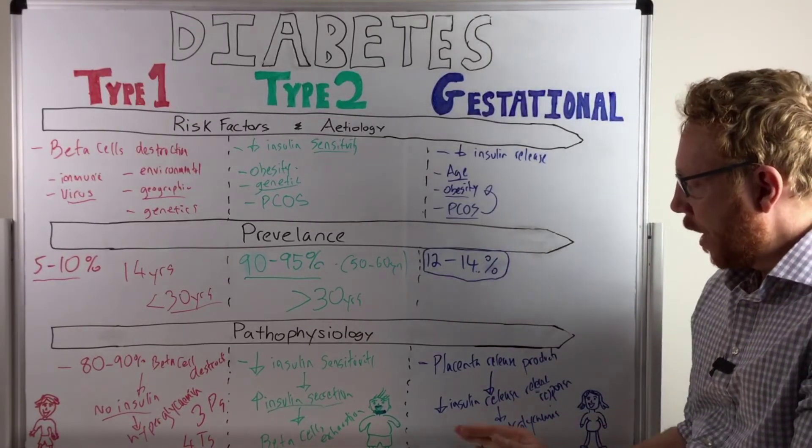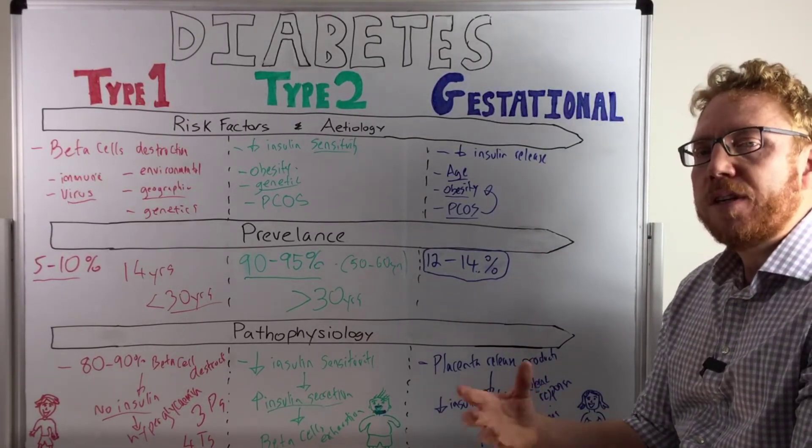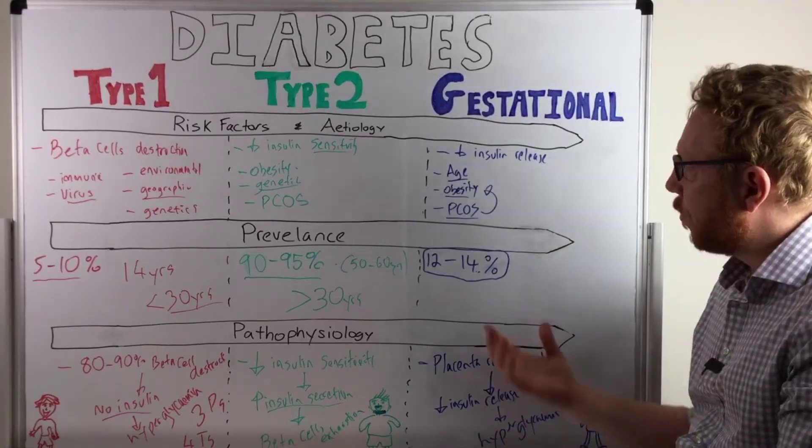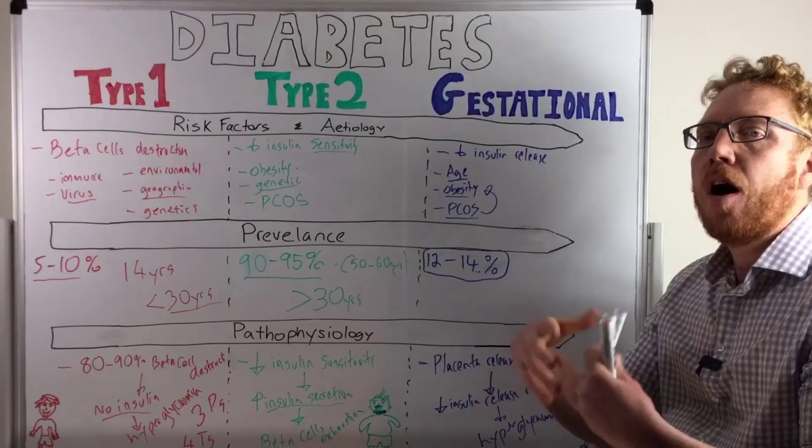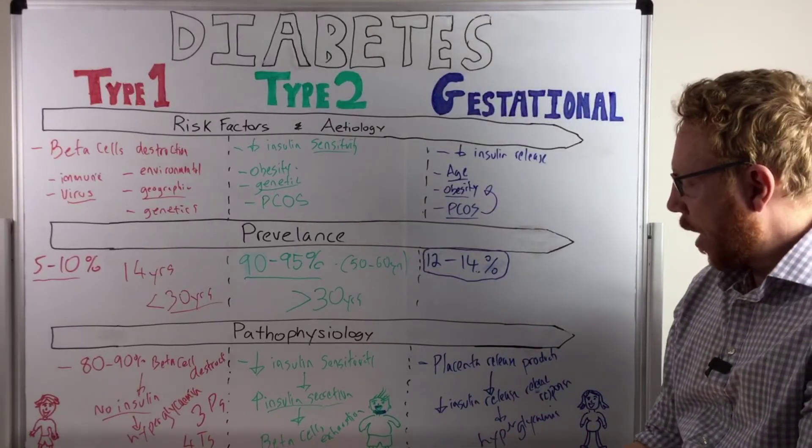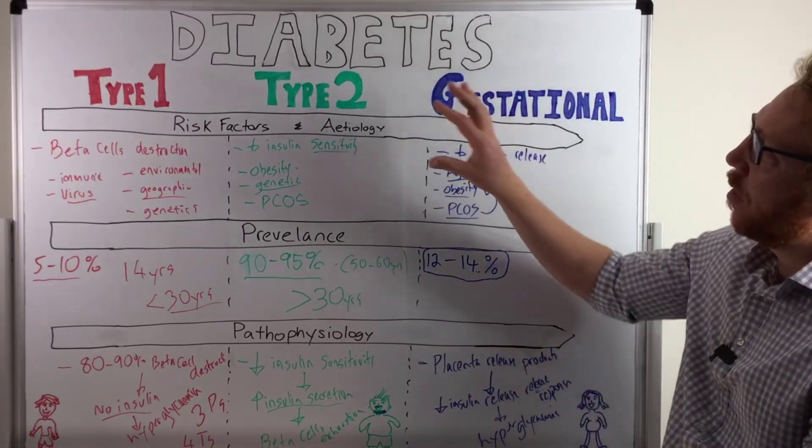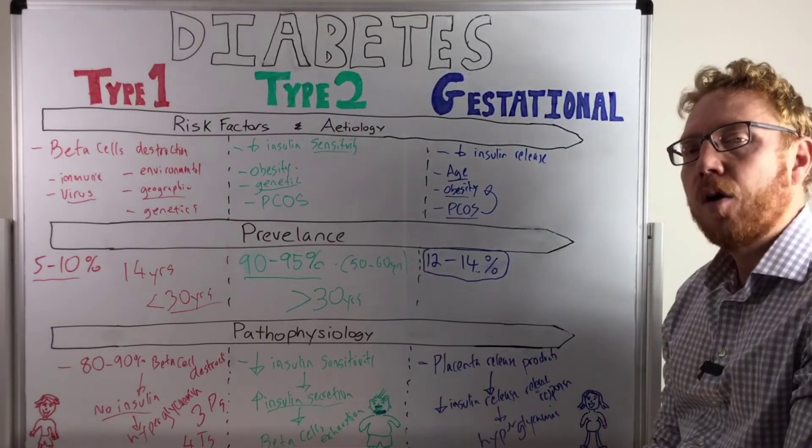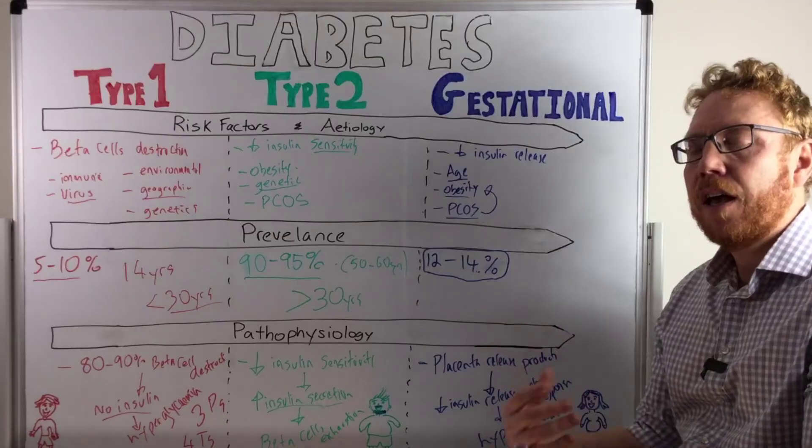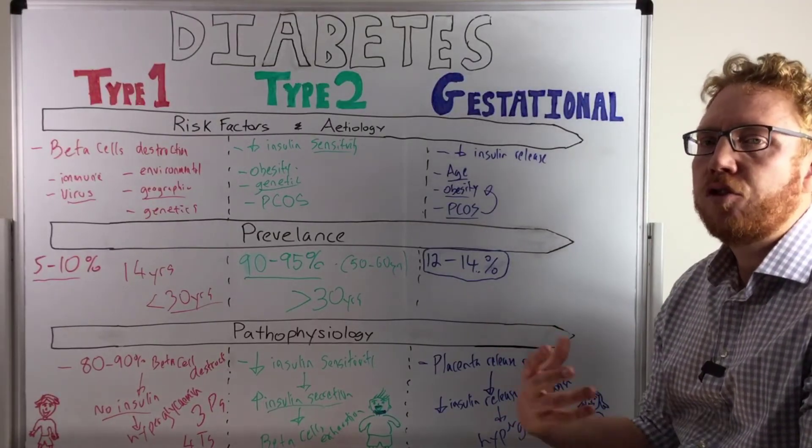In terms of the mother, some risks that are associated with this form of diabetes is that because the baby's bigger, higher risk of C-sections required. The mother's got a higher risk of developing type 2 diabetes later in life. And then also preeclampsia, which is a blood pressure issue during pregnancy.